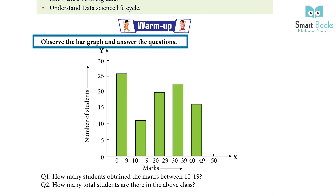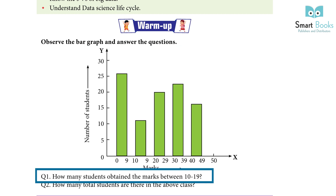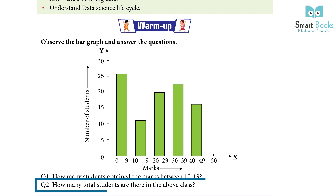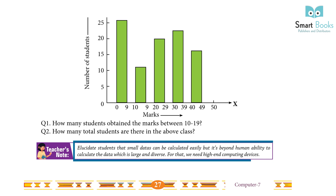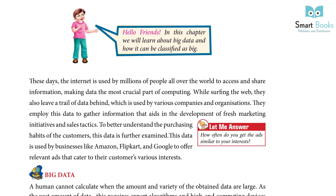Warm up: Observe the bar graph and answer the questions. Question 1: How many students obtained marks between 10 to 19? Question 2: How many total students are there in the class? Teacher's note: Small data can be calculated easily, but it is beyond human ability to calculate data which is larger and diverse — for that we need high-end computing devices.